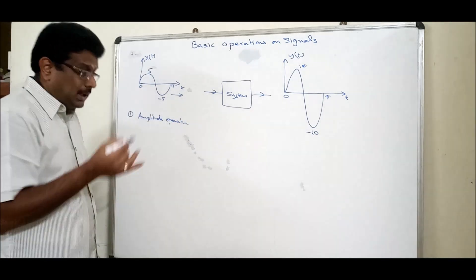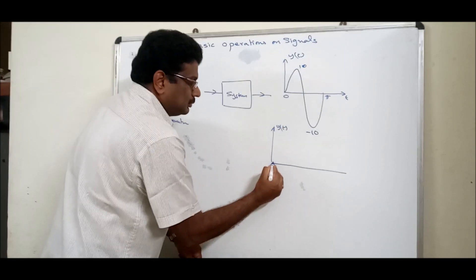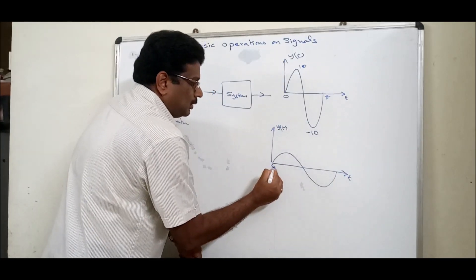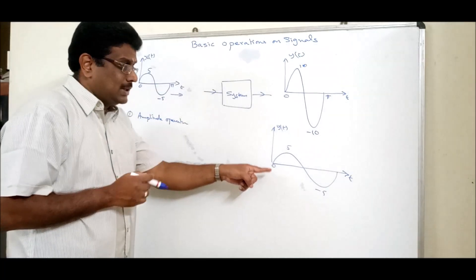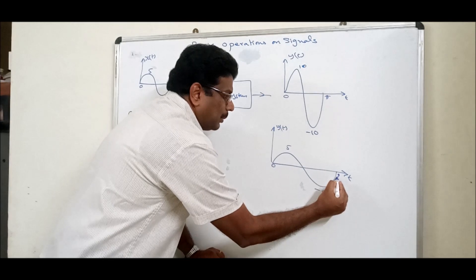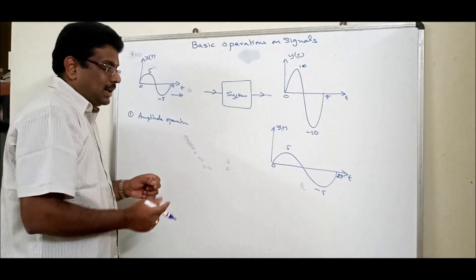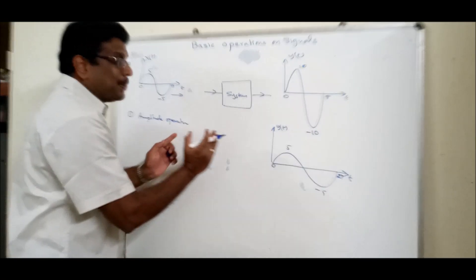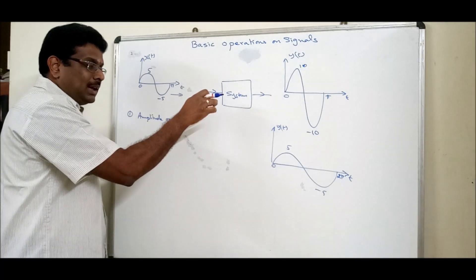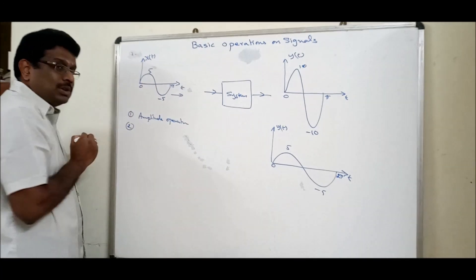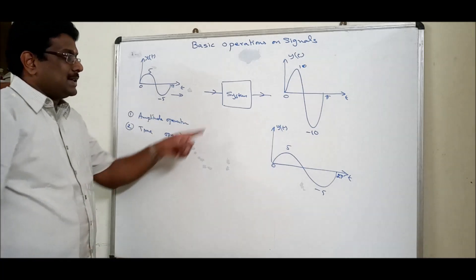Now, consider a case where you get a different output. Is there any change in amplitude? This is the input signal and this is the output signal — there is no change in amplitude. So what is the change in the signal? Time is changed. This particular time is expanded, time is varied. So the system is performing a time operation on the input signal.